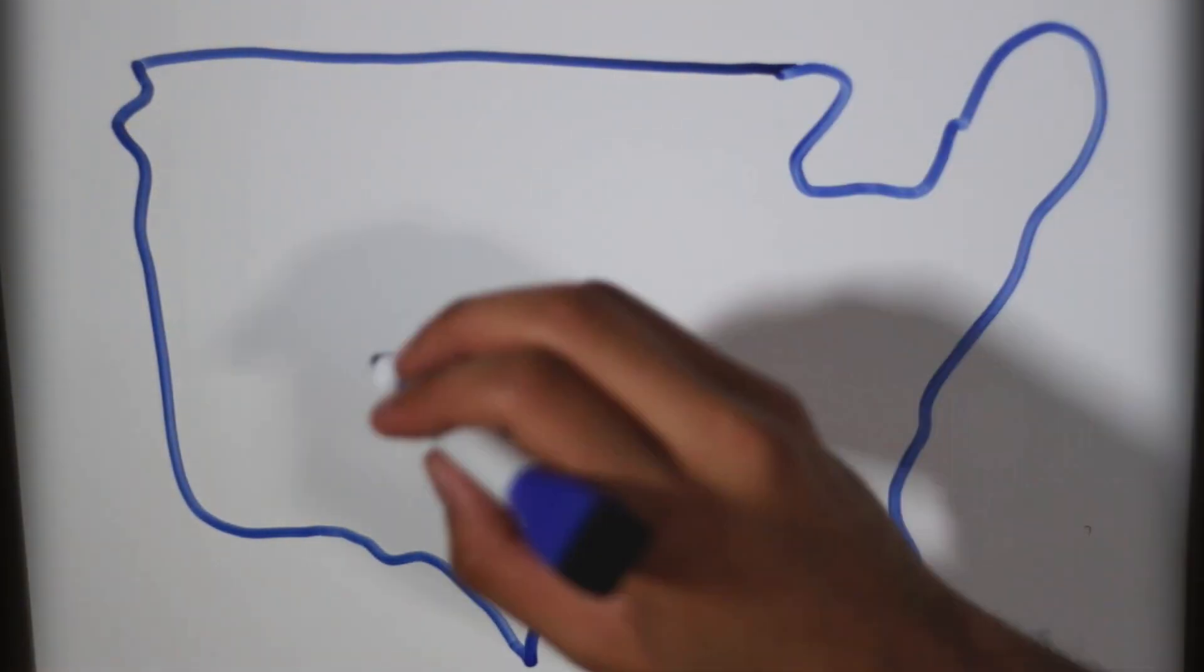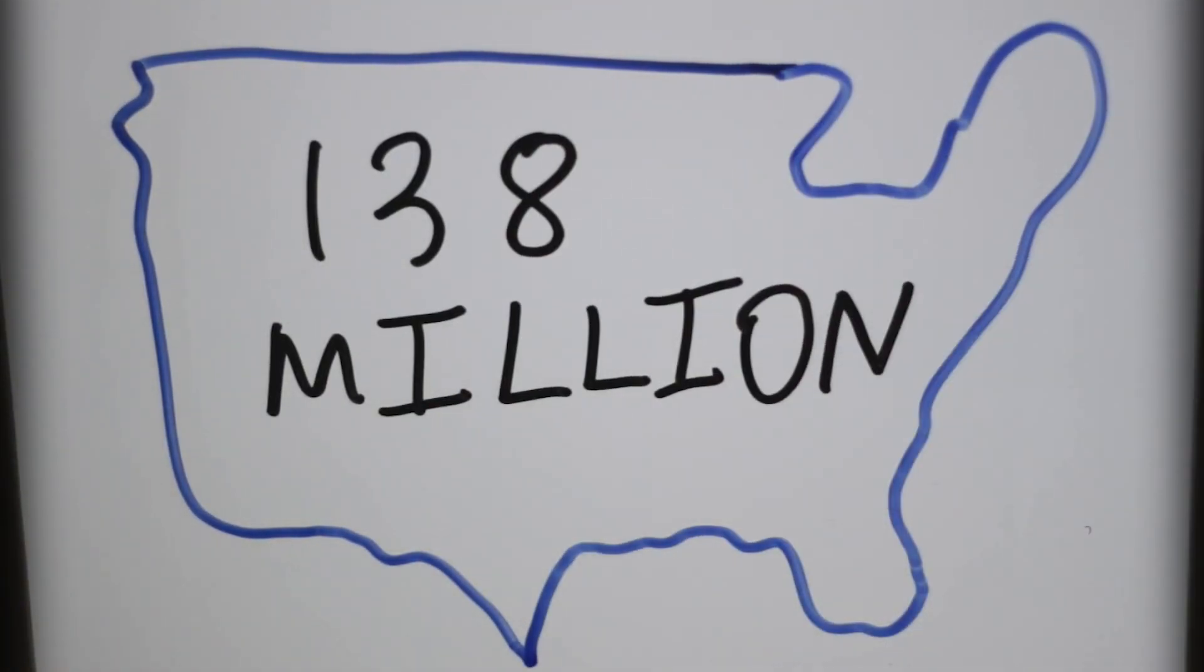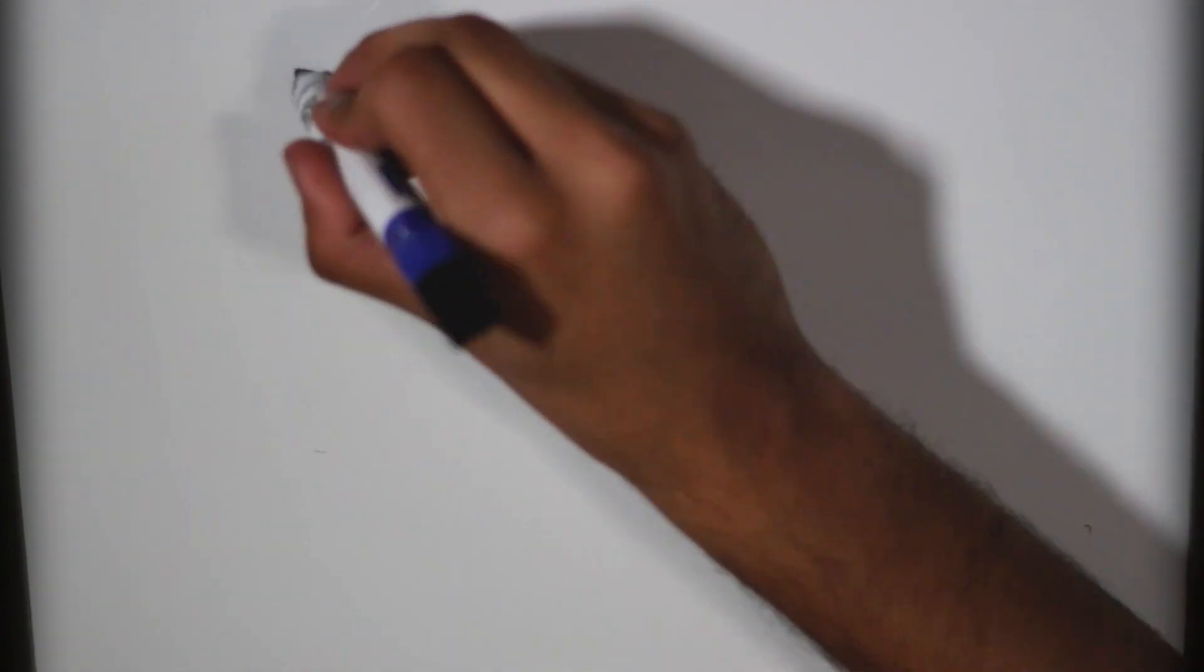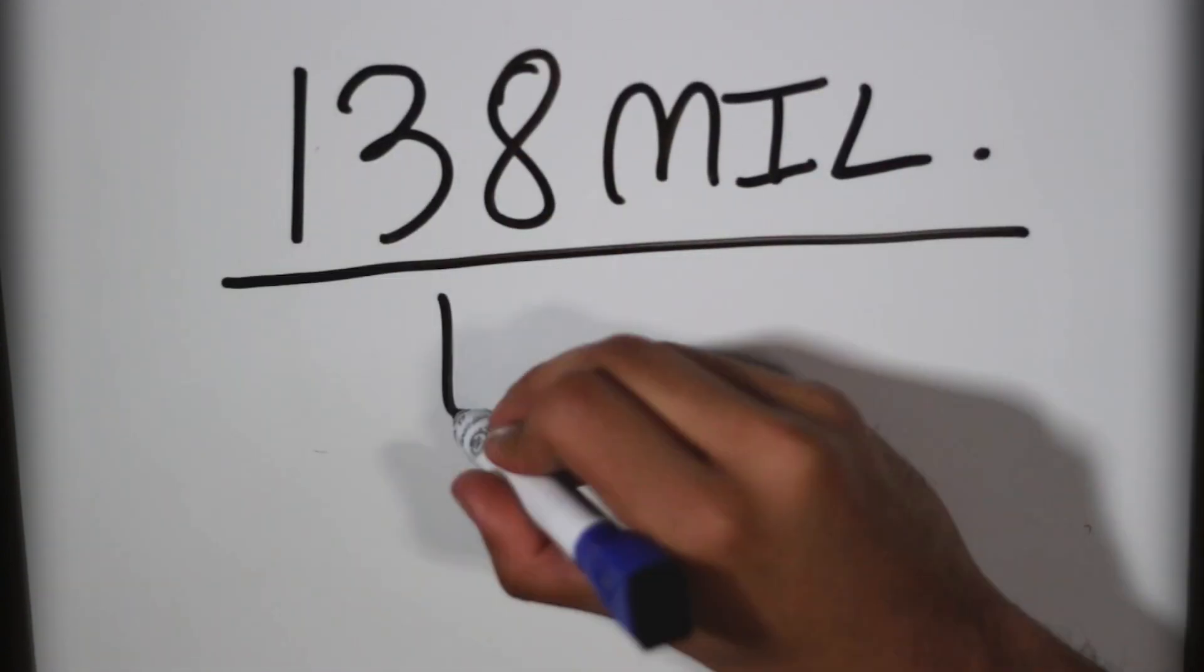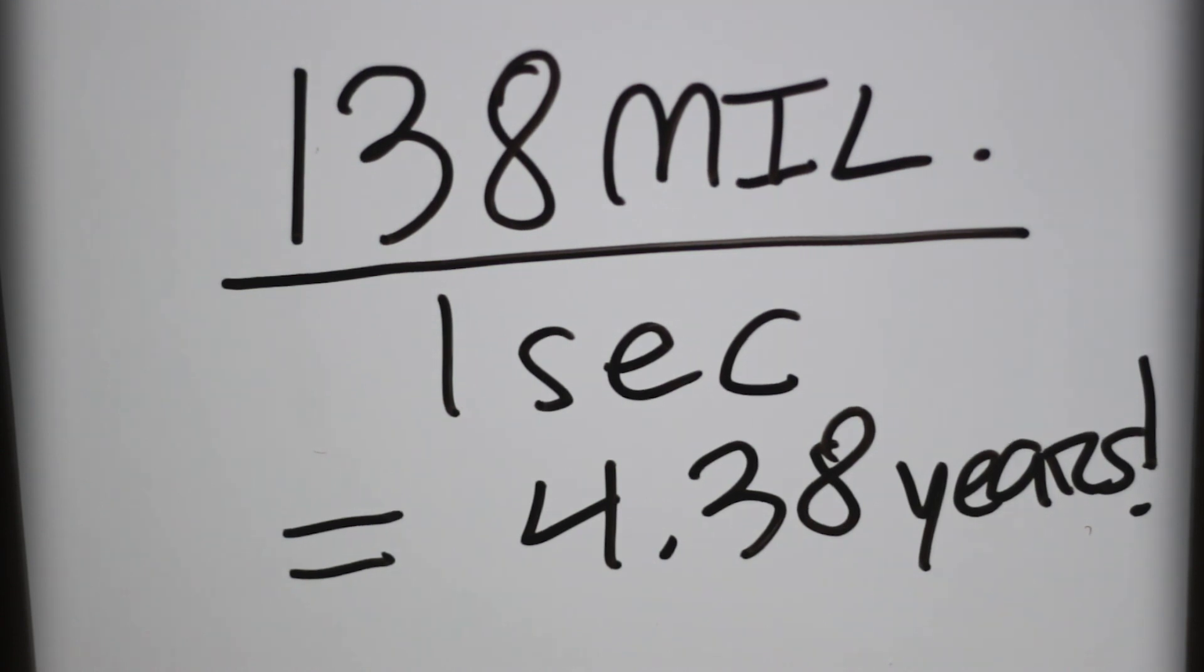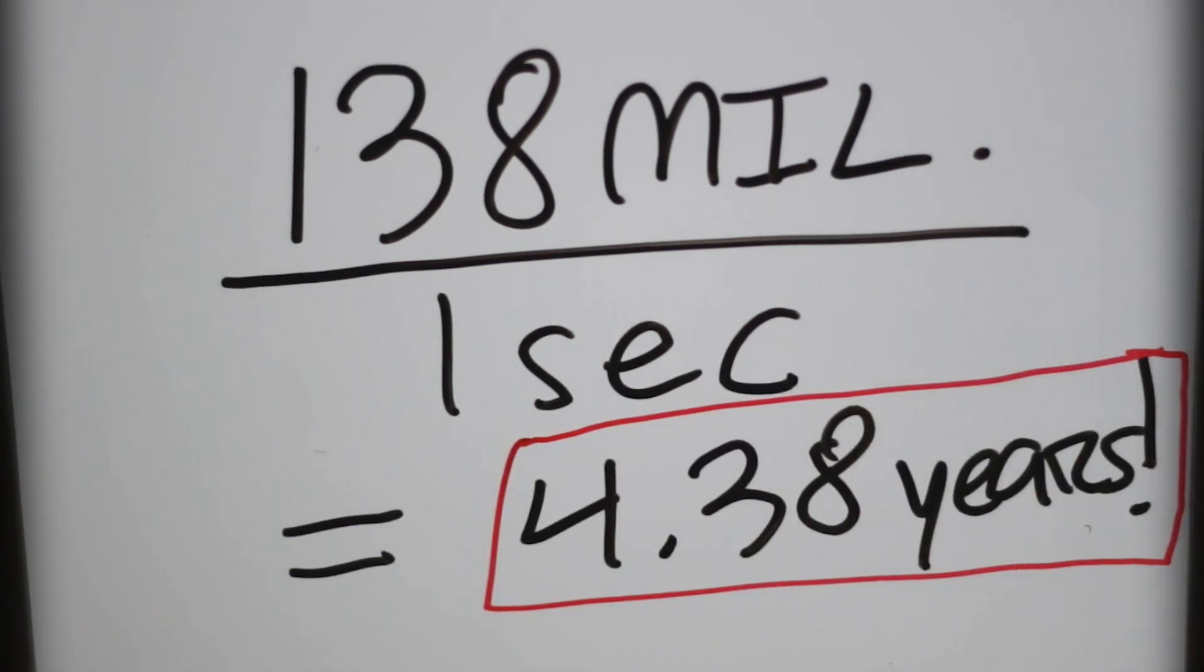In the 2016 election, more than 138 million Americans cast a vote for one of the candidates. If each vote took one second for election officials to manually record, it would have taken over four years to process the results, basically in time for the next election.